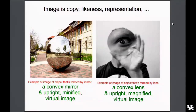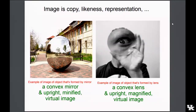An image is a copy, a likeness, or a representation of an object. An image of you would be a copy or a likeness of you; an image of a tree would be a representation of a tree. Here are a couple of examples of images — this one is of a tree, and this one is of a person.